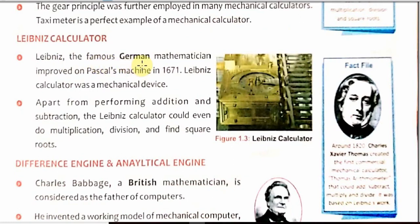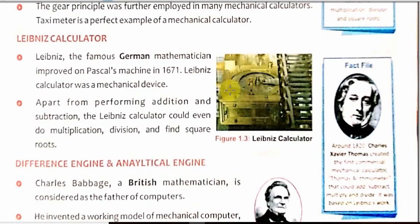The third one was the Leibniz calculator. Leibniz was a famous German mathematician. In 1671, he invented the Leibniz calculator, which was a mechanical device. Apart from performing addition and subtraction, the Leibniz calculator could also do multiplication, division and square root. Look at this figure — this is the Leibniz calculator.